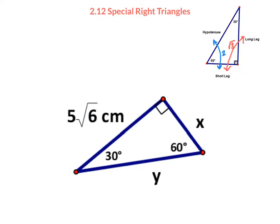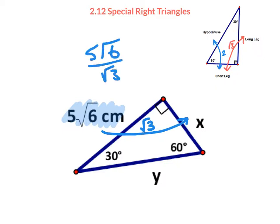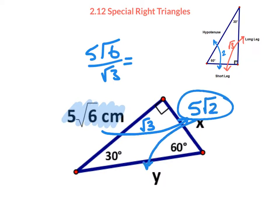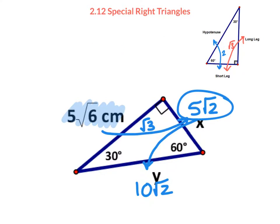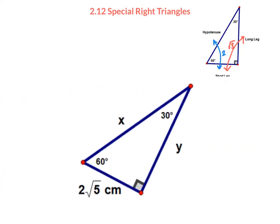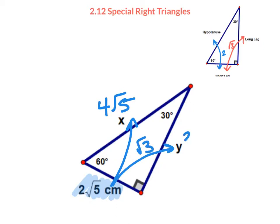With a long leg of 15√6: dividing by √3 gives short leg 5√2, and doubling gives hypotenuse 10√2. With short leg 2√5: doubling gives hypotenuse 4√5, and multiplying by √3 gives long leg 2√15 — and 15 doesn't break down any further.